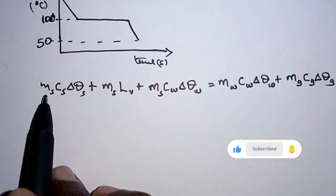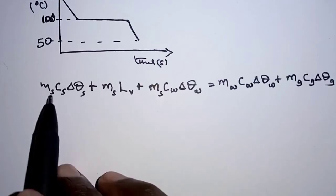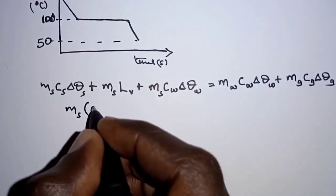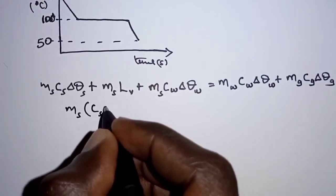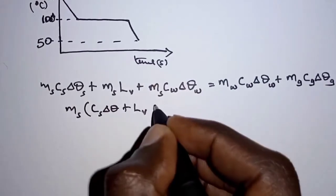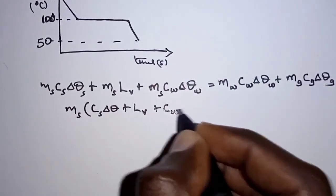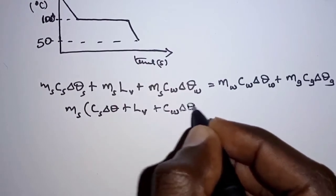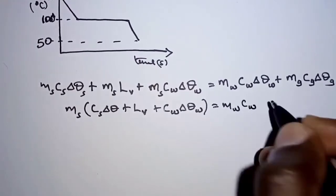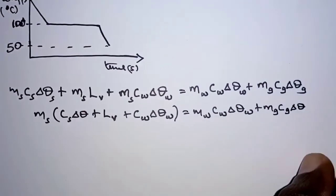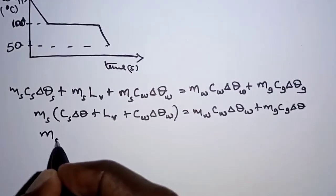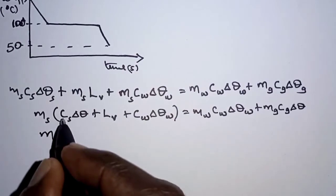On the left-hand side, since we are looking for the mass of steam, we factor it out. We have: mass of steam × [specific heat capacity of steam × temperature change + latent heat of vaporization + specific heat capacity of water × temperature change]. On the right-hand side we substitute the known values.